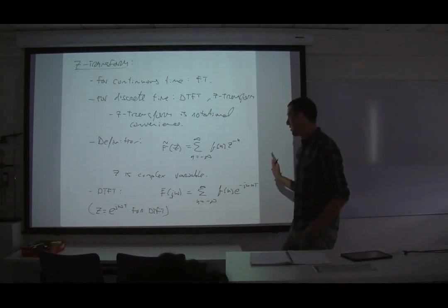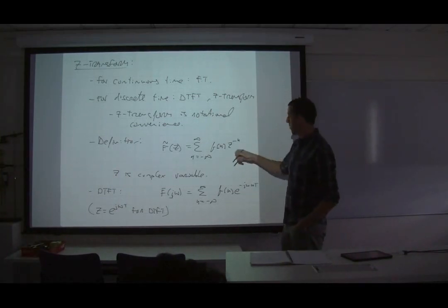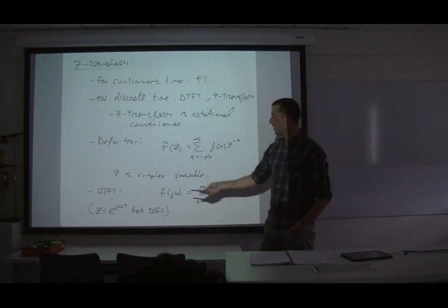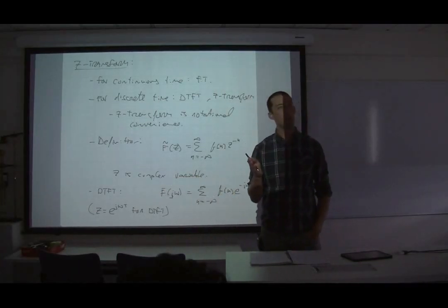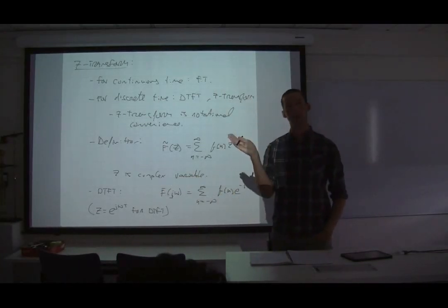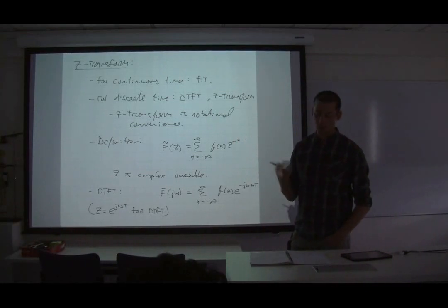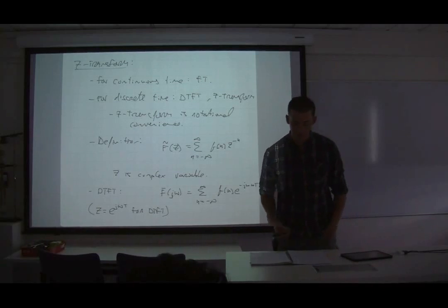At first glance it's just a notational convenience — whenever I write a discrete time Fourier transform, I get tired of writing e to the j omega T when, for a chosen frequency, it's a constant. So I just write Z and that's it.